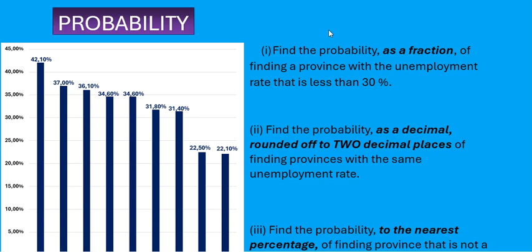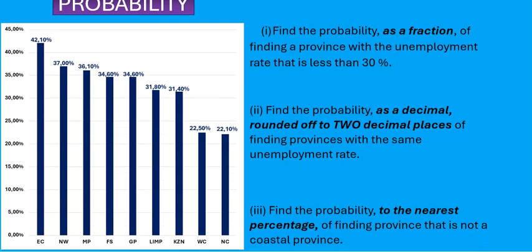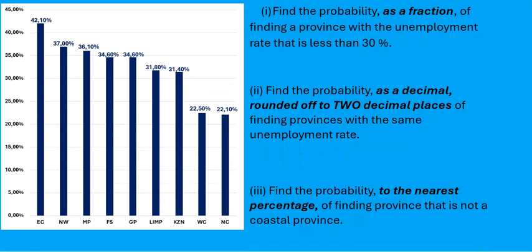This is probability. Let's look at the questions. Find the probability as a fraction of finding a province with the unemployment rate that is less than 30%. If you look at the bar graph on the left, the unemployment rates are given — even above the bar graph we've got the unemployment rate given. So how many provinces here have an unemployment rate that is less than 30%?